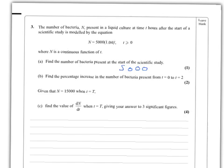Find the percentage increase in the number of bacteria present from time equals 0 to time equals 2. We need to put t=2 into that equation, and we get N=5,408. So the percentage increase is 408 out of 5,000 times 100, which gives us 8.16%.